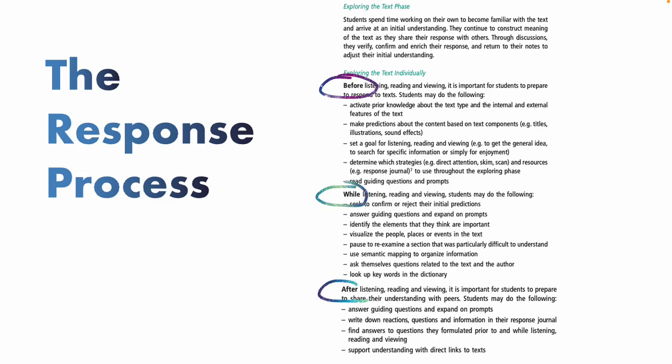Before we read, watch, or listen to a text, we ask students questions or do a little activity to engage and activate their prior knowledge about a topic, or to help determine what strategies they're going to use. While they're reading, watching, or listening, we give them something to focus on — instead of just putting on a movie, we say: take note of who the main characters are and their key personality characteristics, or discover what the main problem is and fill in a graphic organizer of the timeline. After we read, watch, and listen — the stage we're most familiar with — they can think about things themselves and then compare with a friend.